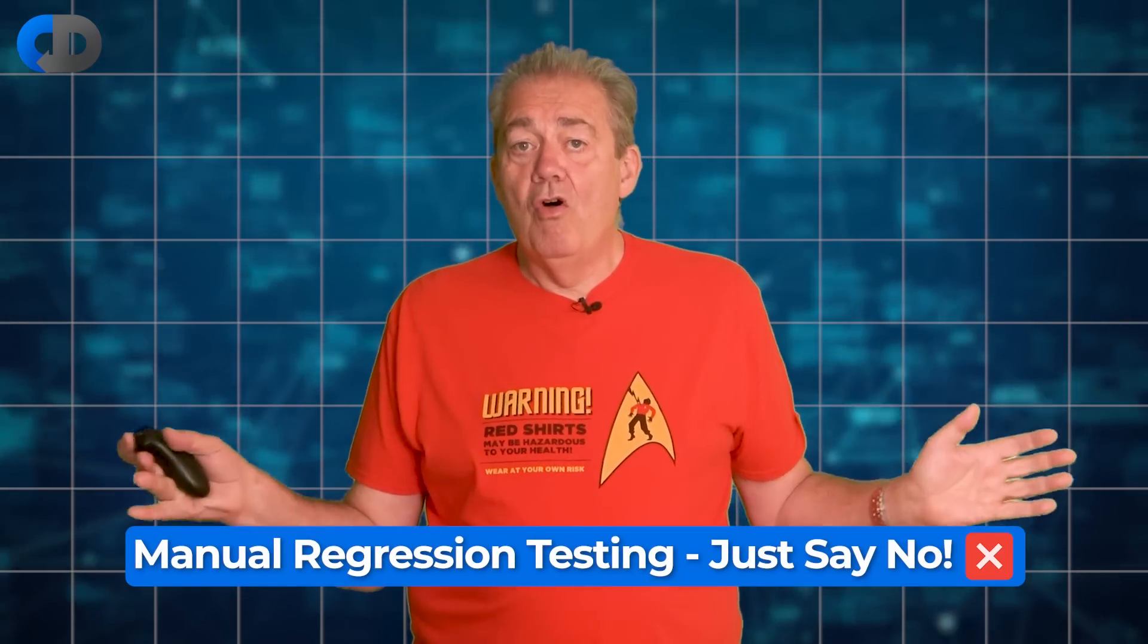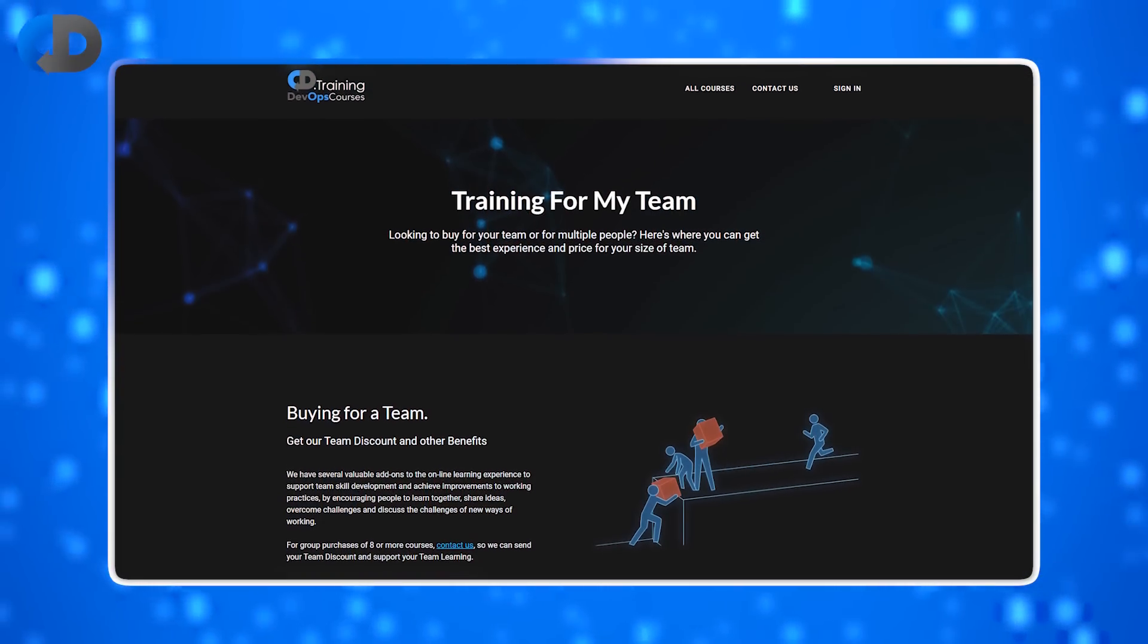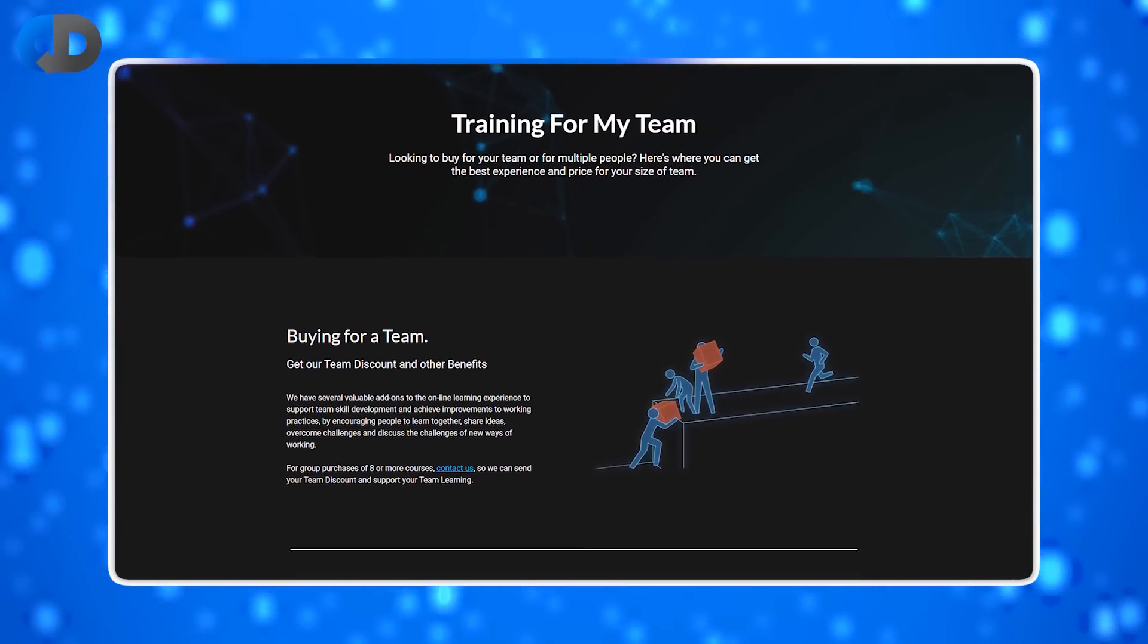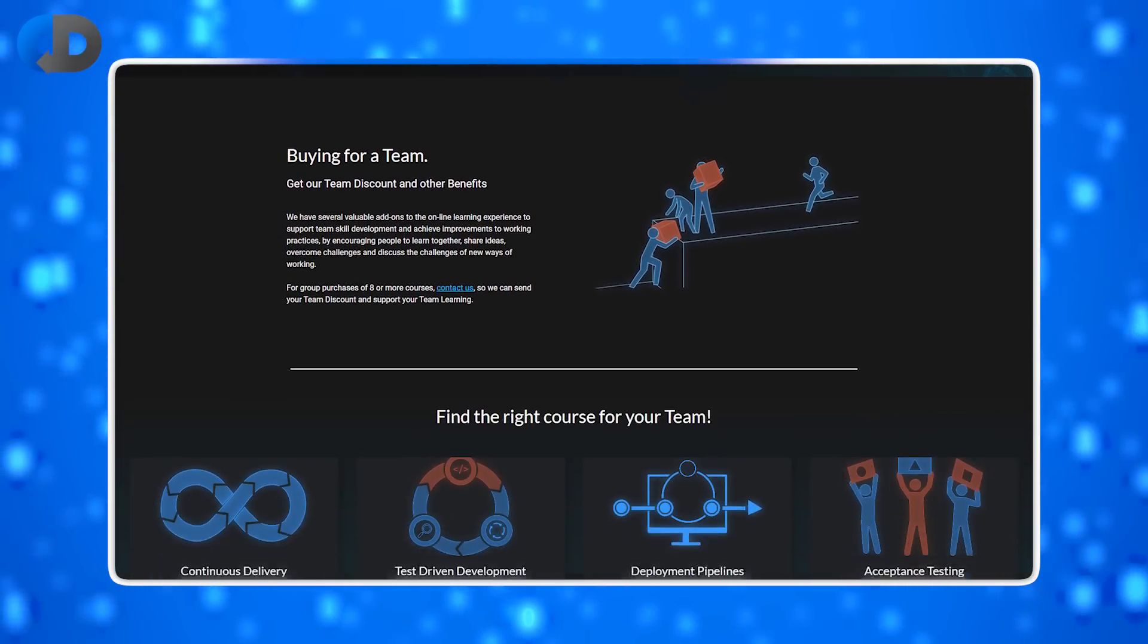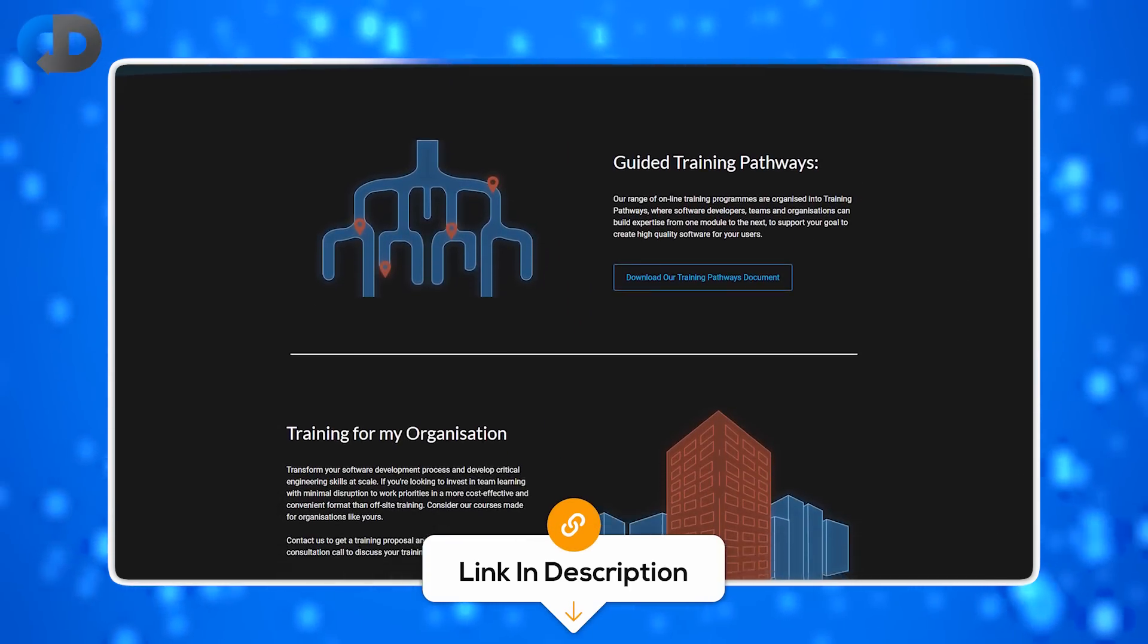I recommend taking a hard line on this in the form of replacing all manual regression testing with automated acceptance testing. If you'd like to improve your testing approach for you and your team, I have a range of online training programs that combine self-study with live workshops and offer big discounts for team bookings. Do click on the links in the description below and check them out.